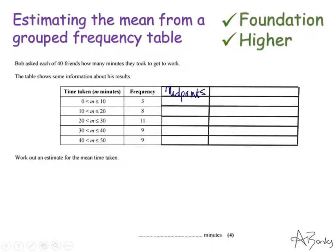My first one is between zero and 10. So the midpoint there is 5. The next one is 10 and 20. That's a midpoint of 15. 20 and 30, it's going to be 25. 30 to 40 is 35. And 40 to 50 is 45.